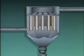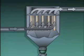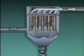A bag house, on the other hand, uses a series of porous bags installed in the gas flow path to physically filter particulates from the combustion gases. As the combustion gases are drawn through the bag house, particulates are trapped on the surfaces of the bags while the rest of the combustion gases pass through.